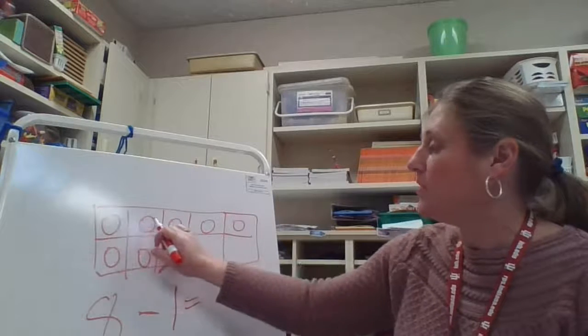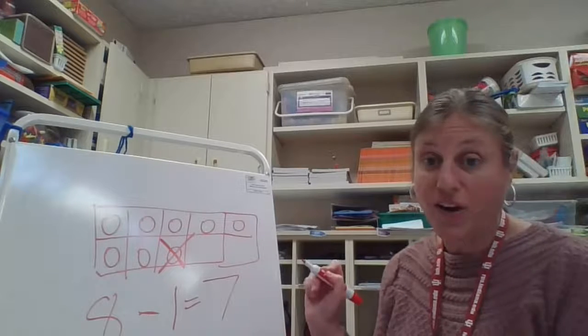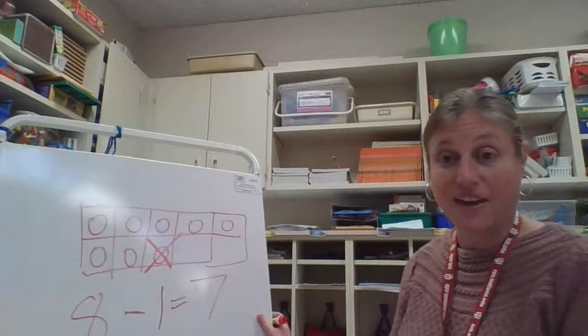And how many are left? One, two, three, four, five, six, seven. So eight minus one, or eight take away one, equals seven.